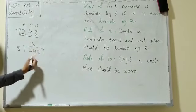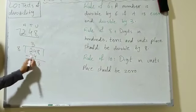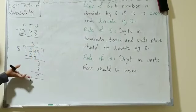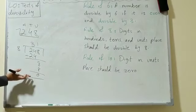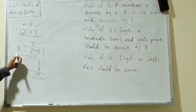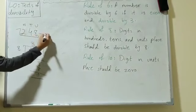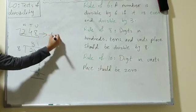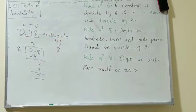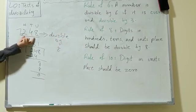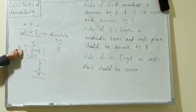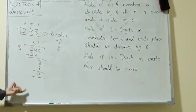Dividing 248 by 8: 8 threes are 24, and 8 ones are 8, so the remainder is 0. That means 248 is completely divisible by 8. For the rule of 8, you check the last three places — units, tens, and hundreds — and if they are divisible by 8, the whole number is divisible by 8.